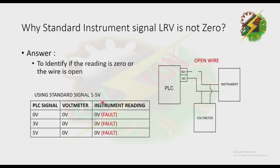But if we use a standard signal, the lower range value is 1 volt — so if the instrument receives 0, it means it is faulted. From our earlier example with negative 10 to 10 volts: since there is a value of zero between them, the negative 10 to 10 volt signal is considered substandard.